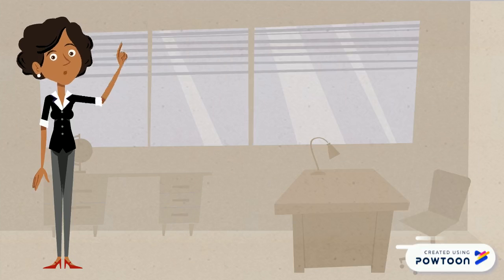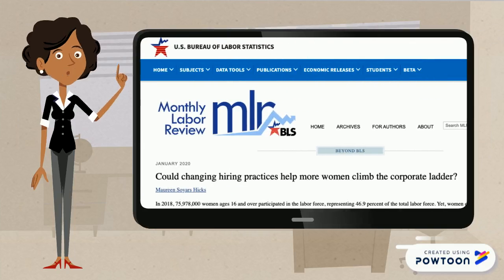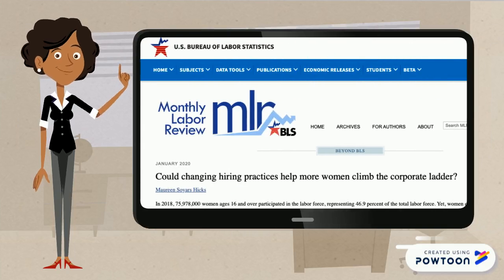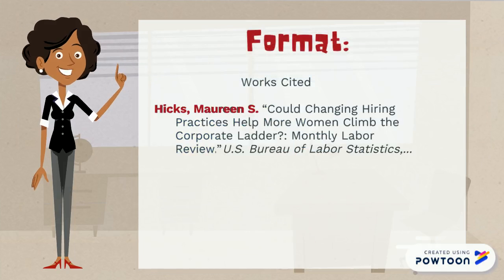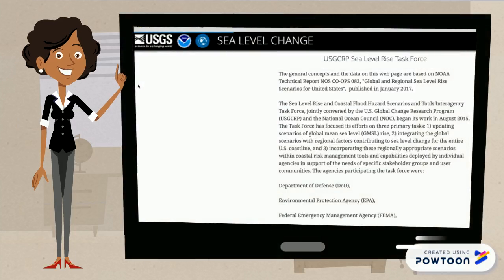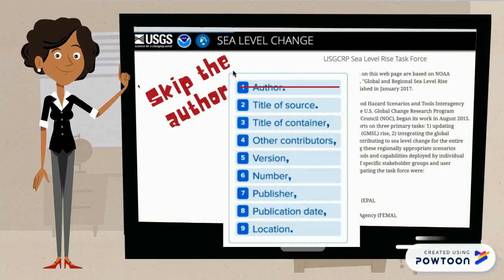In most cases, you're actually going to be citing a particular article or web page on a website instead of the whole website. For that, you want to use the author of that specific page in the author section if there is one identified. If there's no author, or if the author is also the publisher of the website, then you can skip the author section and just move on to the title element.